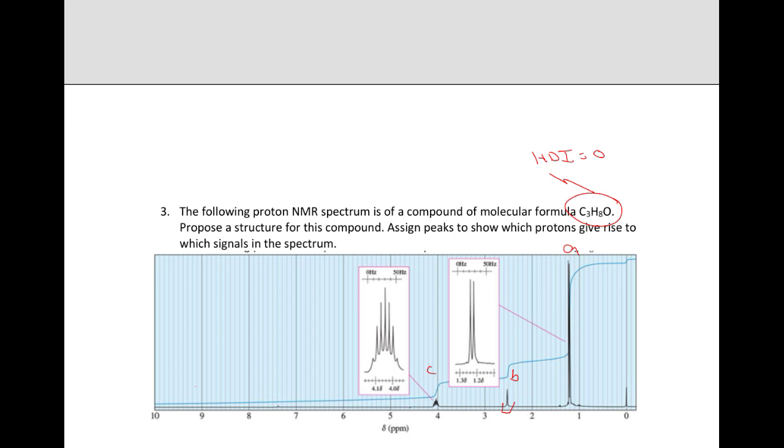You can see that we have a doublet here. And then here we have 1, 2, 3, 4, 5, 6, 7. So we have a septet. So we have a doublet and a septet.